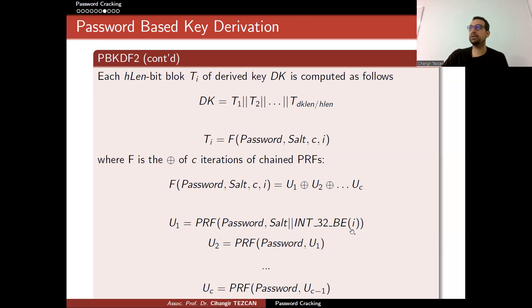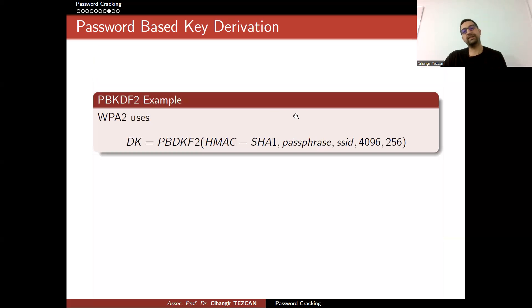These U_i's are calculated like this: you have the password, you have the salt, and you also concatenate something to the salt. This is a counter i. In here it is one, so you write the number one as a 32-bit integer using big-endian notation. This way you generate these U_i's and XOR them and obtain T_i's, and then concatenate these T_i's to obtain anything as long as you want as your secret key.